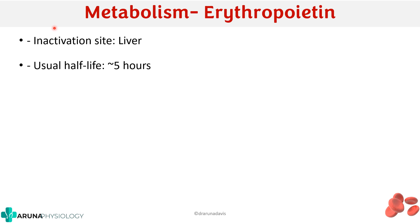You can also expect short notes on erythropoietin as such. In that case, you can write about the source of erythropoietin, the mechanism of action, the functions, how it is metabolized, and what are the factors increasing and decreasing erythropoietin production. These points can be written if erythropoietin is asked as a short essay.